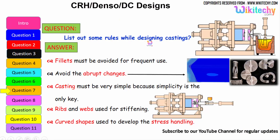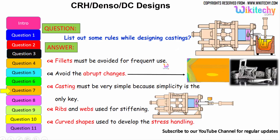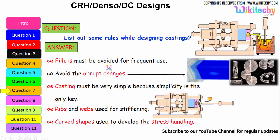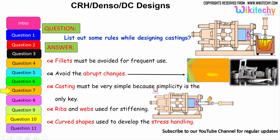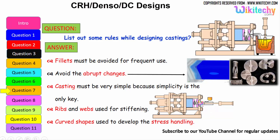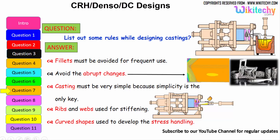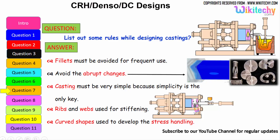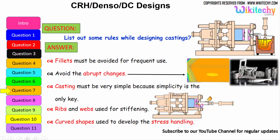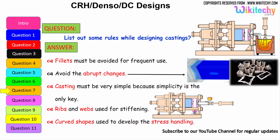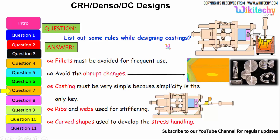Rules while designing castings: fillets must be avoided for frequent use; avoid abrupt changes in section; castings must be very simple — simplicity is the key; ribs and webs are used for stiffening; and curved shapes should be used to develop stress handling — a curved shape helps avoid stress concentration.